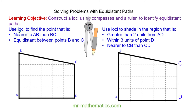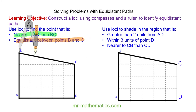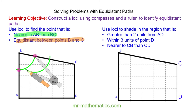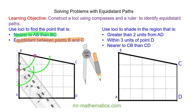We're going to use loci to find the point that is nearer to AB than BC and equidistant between points B and C. To find the points nearer to AB than BC, I'm going to construct an angle bisector of angle B. I place my compass at point B and draw an arc through lines BC and AB, then draw another arc from each intersection point, and finally draw a line from point B through the intersecting arcs.